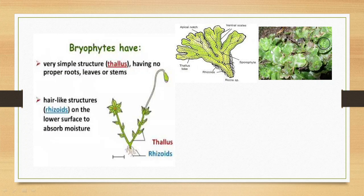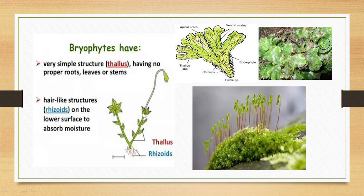Liverworts grow flat upon the ground with rhizoids or hair-like structures arising from the undersurface, which helps keep the plant attached to the soil. They do not grow erect; they grow flat, parallel to the ground, increasing their surface area. Mosses, on the other hand, have the reproductive structures seen as capsules, while the vegetative structure lies upon the ground, giving a carpet-like appearance. If you pick one up, you will observe rhizoids and thallus structures.